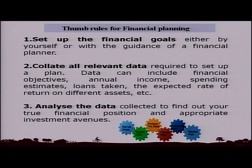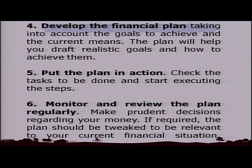Thumb rules for financial planning: Set up your financial goal, either by yourself or with the help of a financial planner. Collate all relevant data — financial objectives, annual income, spending estimates, loans taken, expected rate of return in different asset classes, and asset allocation. Analyze the data to find your true financial position and appropriate financial avenues. Develop a financial plan taking into account your goals and current means — this will help you draft realistic goals and how to achieve them. Put the plan into action, monitor and review it regularly, make prudent decisions, and tweak it to remain relevant to your current financial situation.